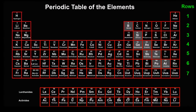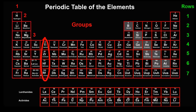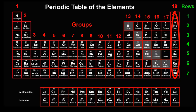You can see that the periodic table is also arranged in vertical columns, which scientists call groups. How many groups are there? 18 vertical groups. The key point about groups is that they contain elements that are similar to each other, like members of a family.